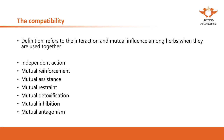The seven categories are: independent action, mutual reinforcement, mutual assistance, mutual restraint, mutual detoxification, mutual inhibition, and mutual antagonism. These seven different kinds of relationship or mutual influence are something you need to think about when you prescribe herbal medicine. This also applies in acupuncture — when you prescribe different acupuncture points in one formula, you also need to think about the interactions between the different points.